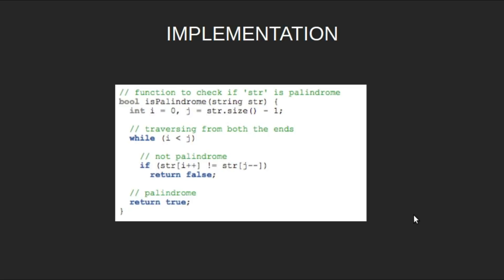Now let's look at the implementation. First, let's look at the isPalindrome function. Initialize i as 0 and j as the size of the string minus 1. We will traverse the string from both ends, and if we find that string[i] is not the same as string[j], we will return false, as a palindrome has the property that it is the same when read from the front or back. If we come out of the loop, we will return true.